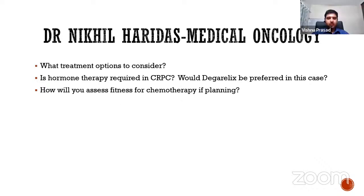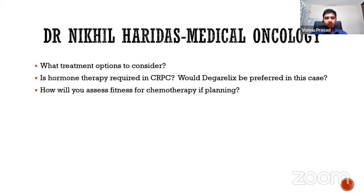To clarify: germline testing is done on peripheral blood, and somatic mutation testing is done on the biopsy or surgical specimen.